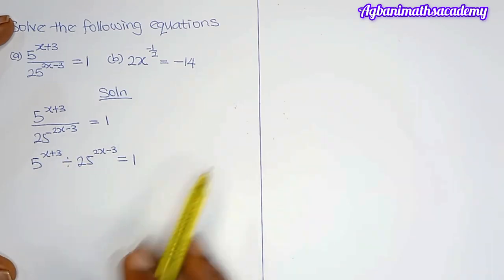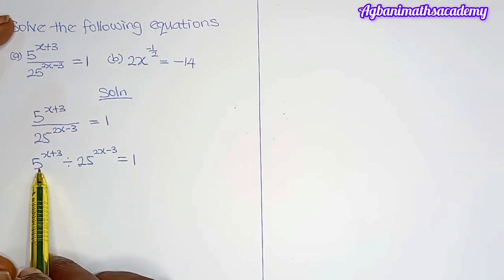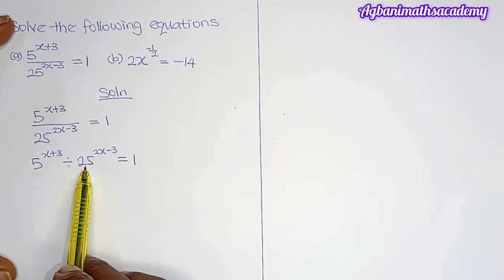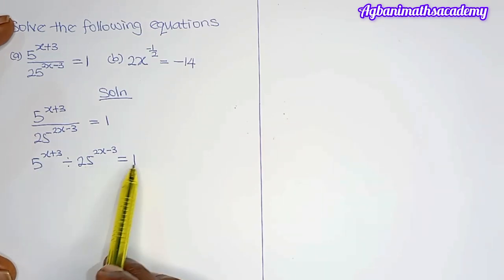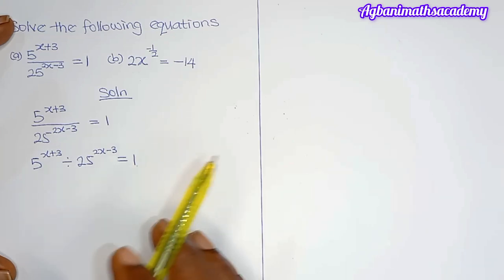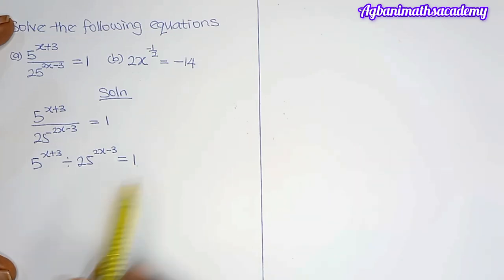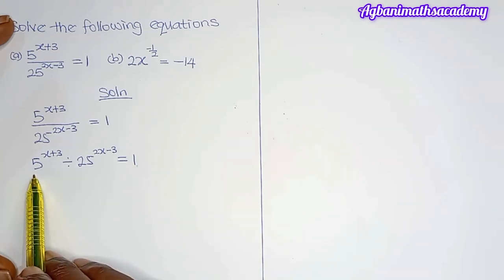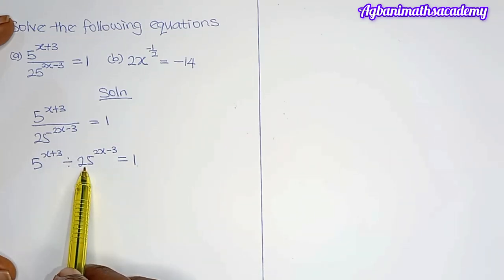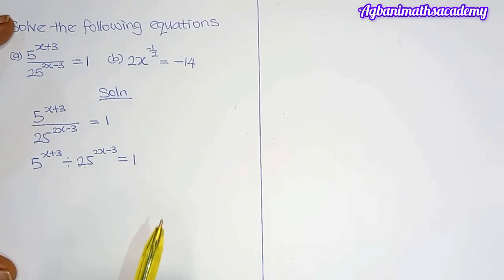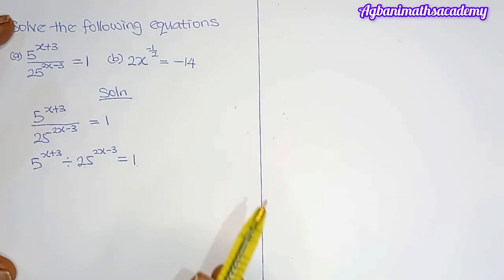Let's look here. The base on the left is 5, the base in the denominator is 25, and the base on the right is 1. So let's convert all the bases to 5. Can we convert 25 to a base of 5? Yes, we can, because 25 is 5 to the power of 2.